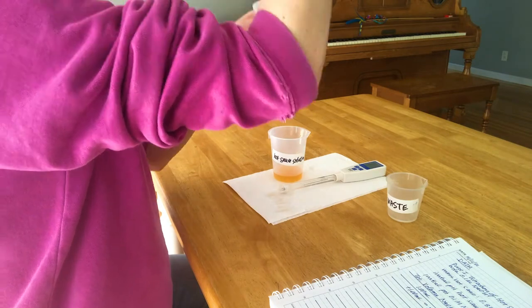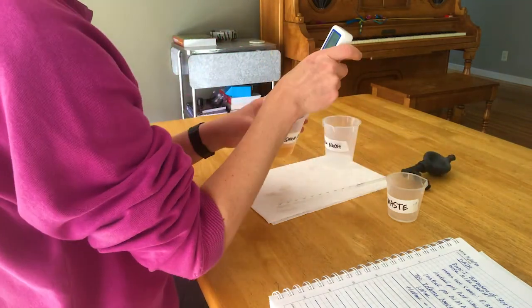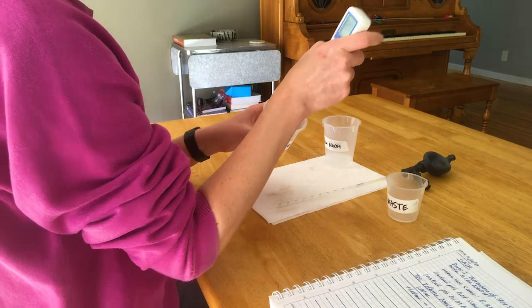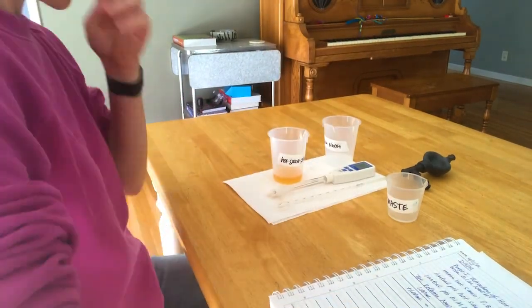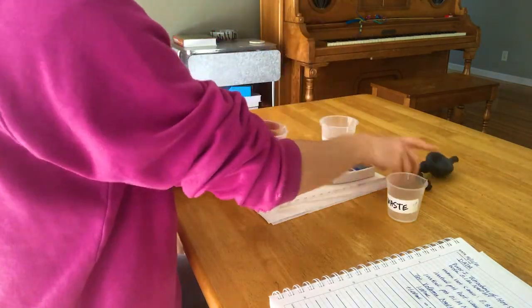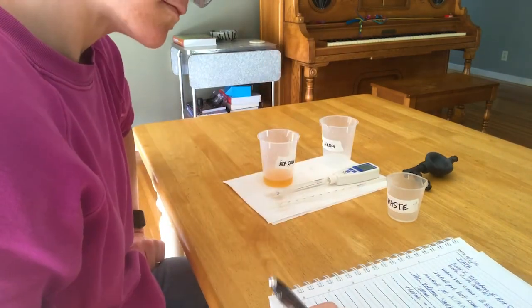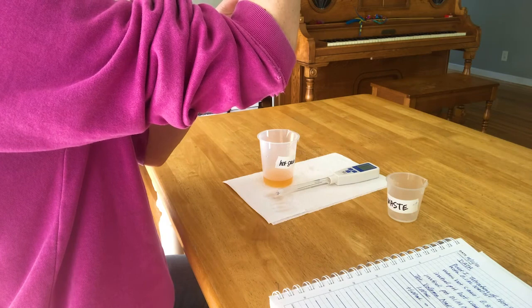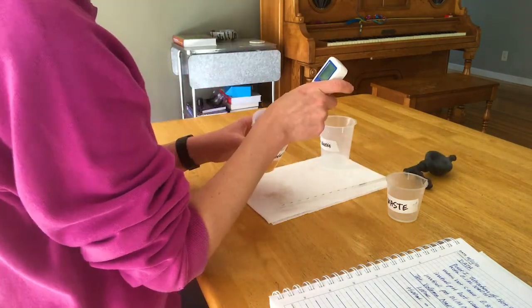Before cleaning up, you may want to go ahead and graph your curve to make sure that it looks alright, because if it doesn't, you have enough solution to do another one if you need to. To clean up, make sure that you rinse your pipette well with distilled water, and you can put all your solutions down the sink with lots of water. Rinse the pH meter off with distilled water as well, and place it back in its salt solution in the container that it came in.